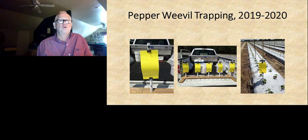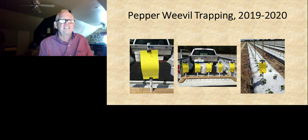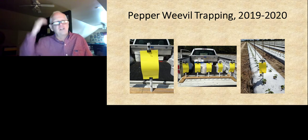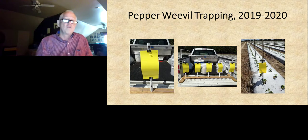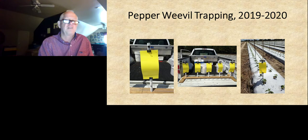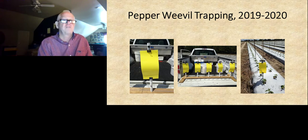Update on pepper weevil, 2019-2020: we continue to look at trapping of pepper weevil for monitoring, overwintering, and hopefully use it in-season as well. One thing we learned early on is these pheromone traps don't work as well when plants are in the field — it's an aggregation pheromone, not a sex pheromone, so it's not as strong. That aggregation pheromone is combined with plant extracts to make it more attractive, and when plants are out there, the competition reduces trap efficacy dramatically. We've been working with Tracy looking at different combinations of pheromone with plant extracts to increase trapping efficacy.